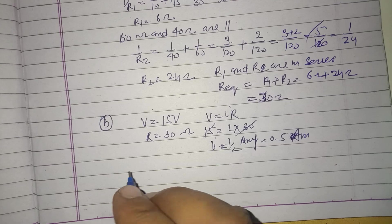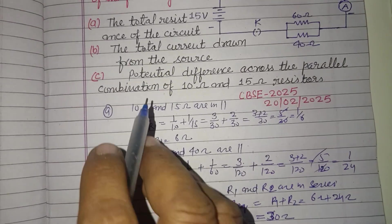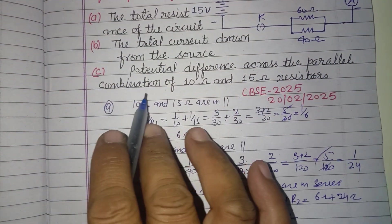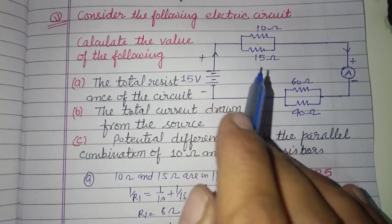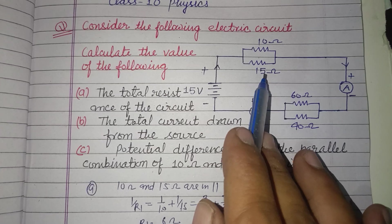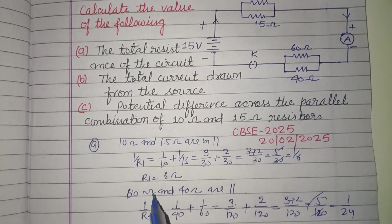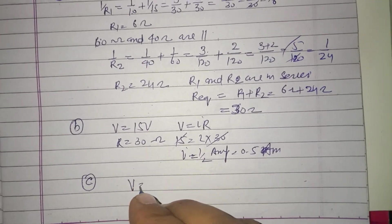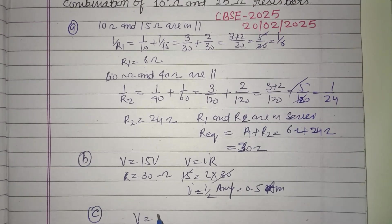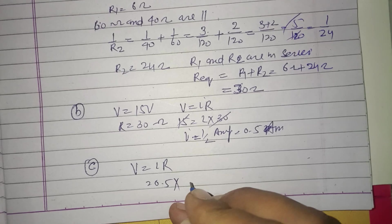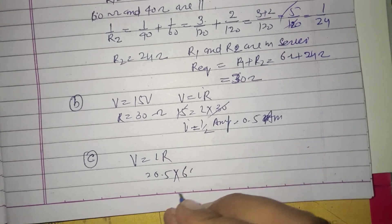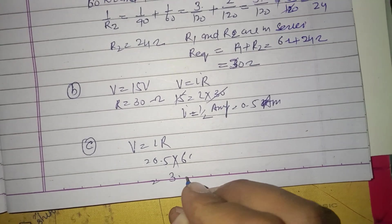Now part C, potential difference across the parallel combination of 10 ohm and 15 ohm resistors. Here are two resistors, 10 ohm and 15 ohm, whose combination resistance is 6 ohm. Therefore potential difference across these two, V equals IR. I is 0.5 and R is 6, so 6 times 5 is 30, this is 3 volt.